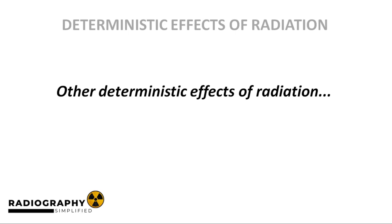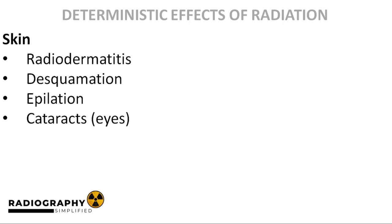Now let's explore other deterministic effects of radiation that do not occur to the magnitude of acute radiation syndrome. These are local effects from local exposures, unlike the acute syndrome which occurs after whole-body exposure. Excessive exposure to the skin can cause reddening of the skin loosely referred to as radiodermatitis, desquamation — which is the shedding of the outer layer of the skin — and epilation, which is the loss of hair.